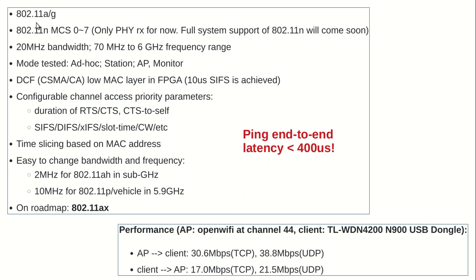Here are the main features. We support 802.11 a/g/n protocols. Currently it works in 20 MHz bandwidth, covering almost all frequencies below 6 GHz. We have tested ad-hoc mode, station mode, AP mode, and monitor mode. You can enable more modes, because as I said, the mode is actually implemented in Linux. We have to operate the signal — packet receive and transmit — precisely in the order of microseconds according to the Wi-Fi standard. So the CSMA/CA LMAC layer is in FPGA.